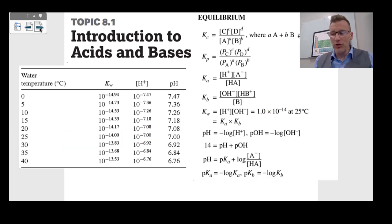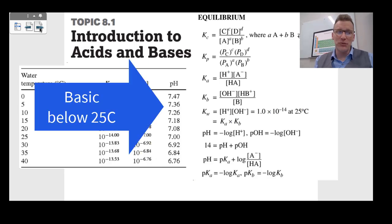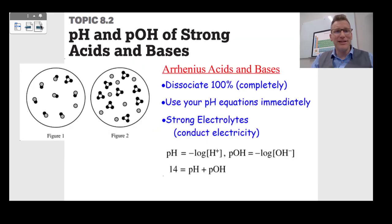At temperatures above 25°C, the pH gets lower — it actually gets more acidic. And for temperatures lower than 25°C, it's going to be a little bit more basic. And that is topic 8.1.